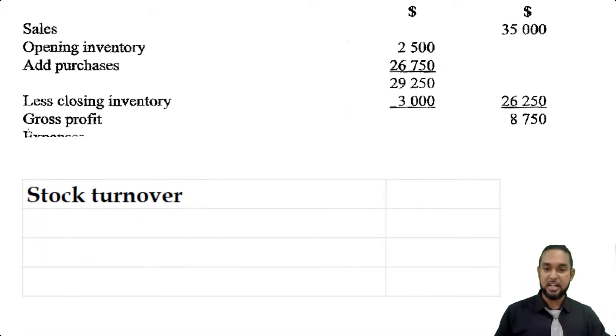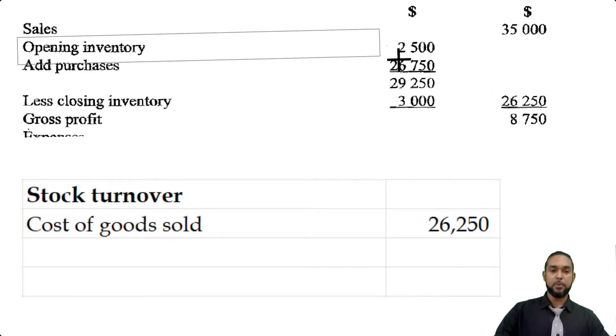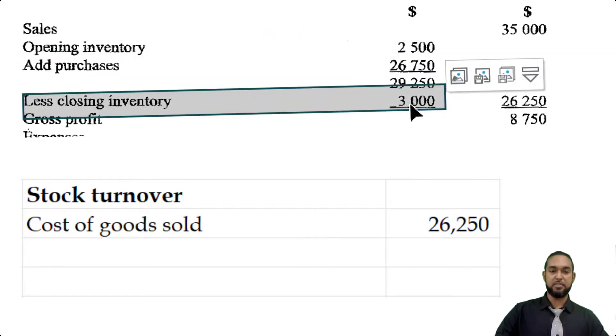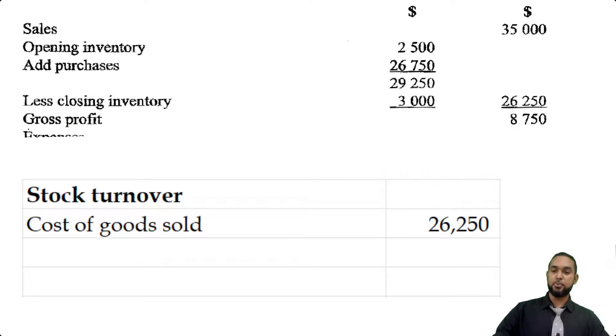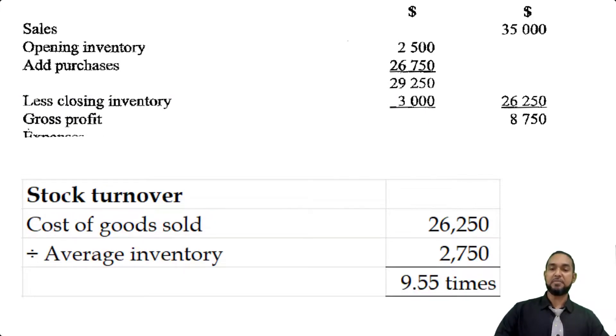Now the last ratio they have us calculating here is an activity ratio. It's the rate of stock turnover. We need the cost of goods sold divided by the average stock. The cost of goods sold was 26,250. The average stock is the average of the opening inventory balance and the closing inventory balance. So that's 2,500 plus 3,000 then divided by 2, which is 2,750. This gives us 9.55 times. This tells us the number of times during the year that the entity sold out its average stock.